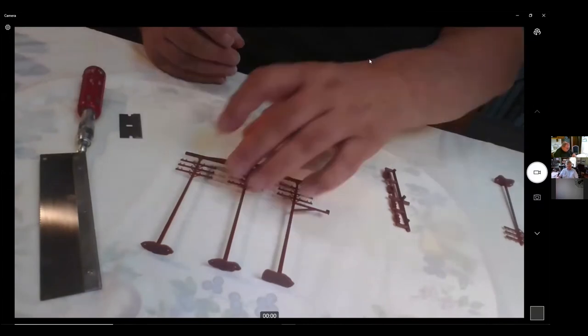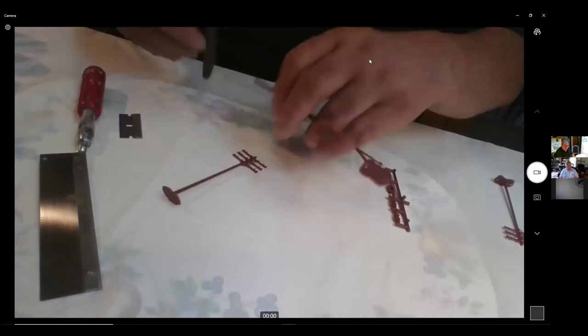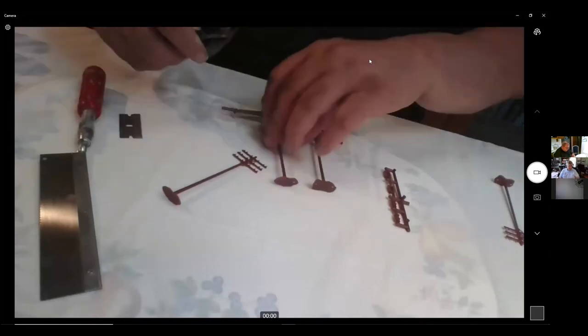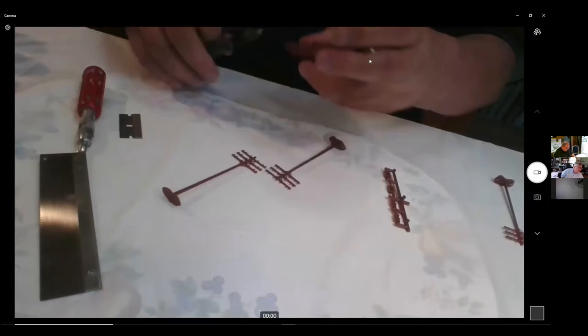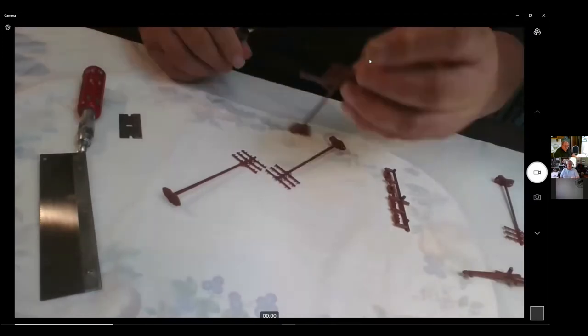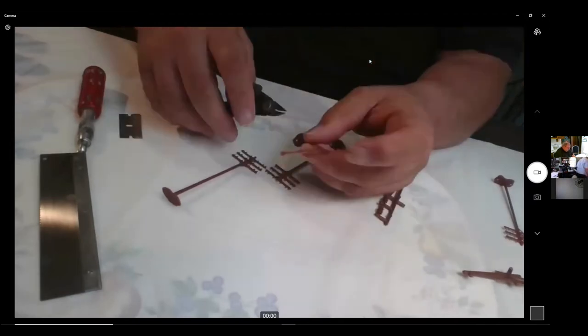The first step is you remove the poles from the sprue. By the way, this little sprue cutter is wonderful. You can use knives, you can use a pair of diagonal wire cutters as well. We were trying to figure out what this little piece was on the pole, but we really couldn't.